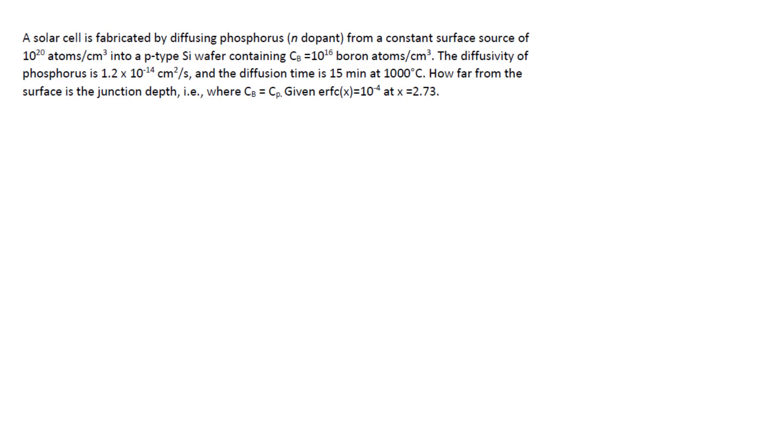A solar cell is fabricated by diffusing phosphorus, that is the n-dopant because phosphorus has five valence electrons. Silicon is a four valence electron material.